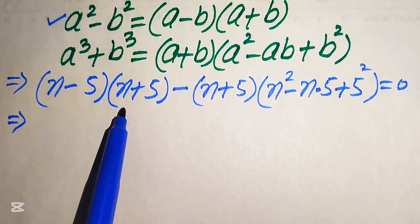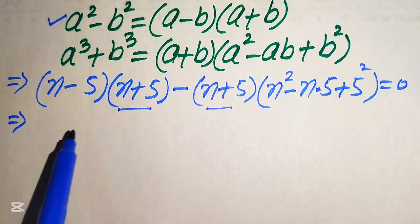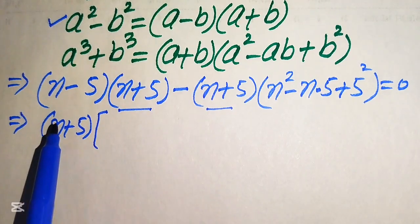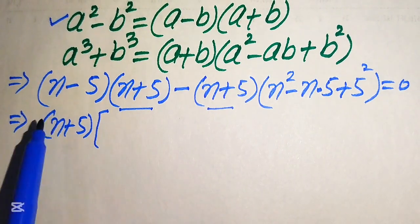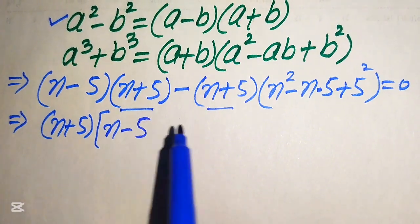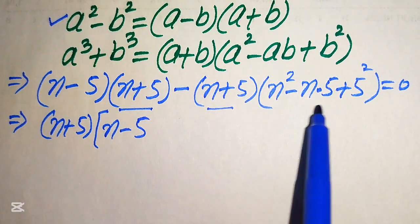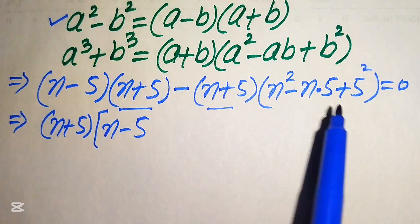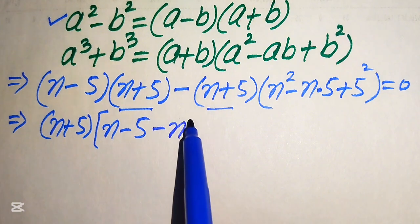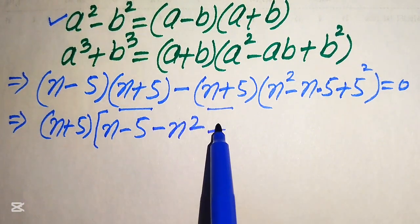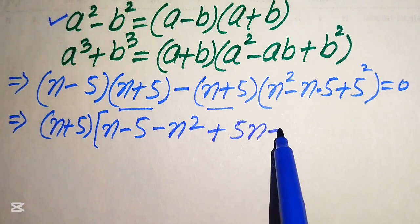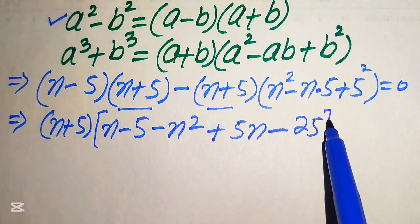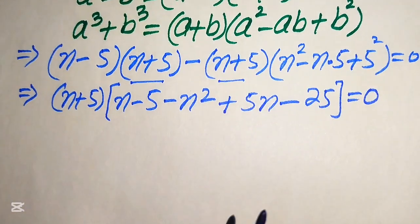Both terms involve (n plus 5), so we factor it out. Taking (n plus 5) common, from the first factor we get (n minus 5), and multiplying the minus sign through the second factor gives minus n squared plus 5n minus 25. The whole equation equals zero.